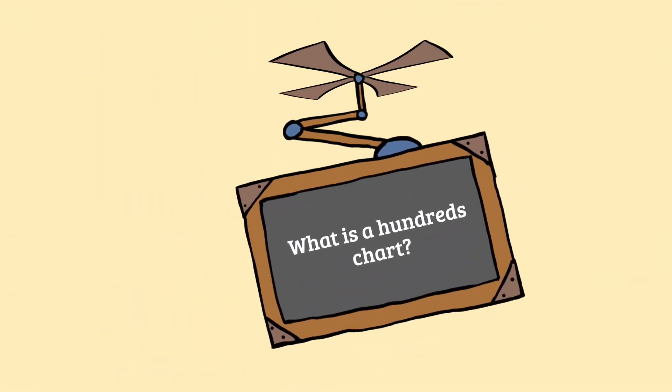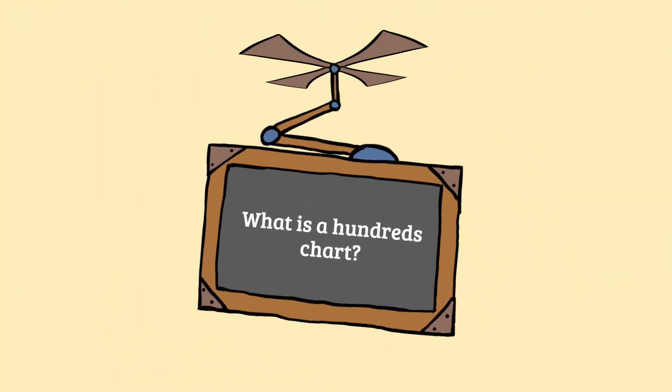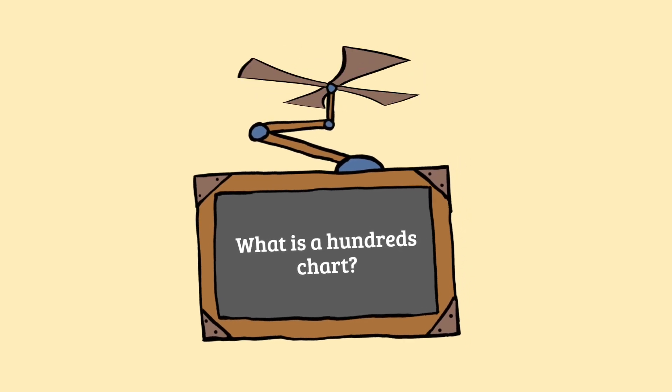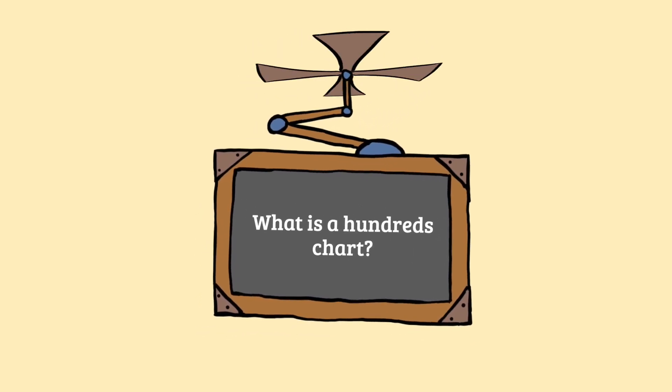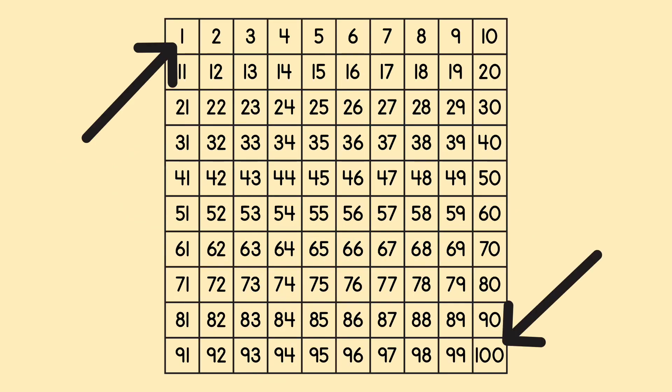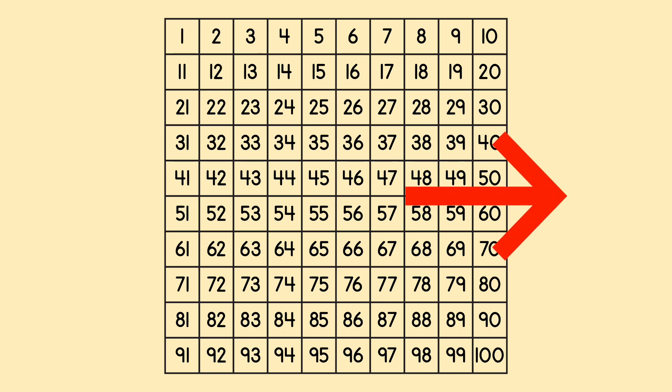So the first thing we need to ask ourselves is, what is a hundreds chart? Well, it's a box divided into 100 little boxes, numbered from 1 to 100. The next thing to remember is that when we are adding, we always either move to the right or down.